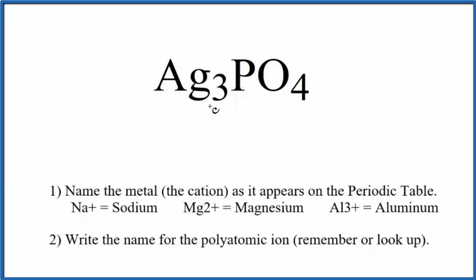So let's first write the name for the metal, Ag. That's silver. Next, we're going to write the name for the polyatomic ion. This is the phosphate ion, one you should remember.